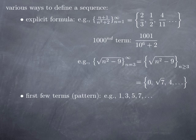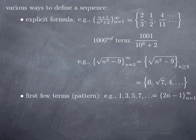Another way to define a sequence is to give the first few terms with the implicit understanding that there is a clear pattern that you may make explicit. For instance, if I give you 1, 3, 5, 7, you would guess the next terms are 9, 11, 13, and so on — the consecutive odd numbers. You can write this as an explicit formula: the sequence 2n−1 where n ranges from 1 to infinity. When n = 1 you get 1, when n = 2 you get 3, when n = 3 you get 5, and so on.